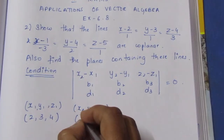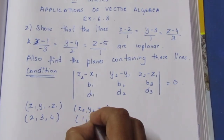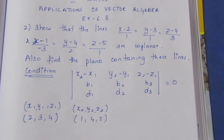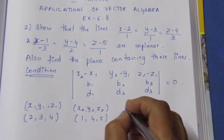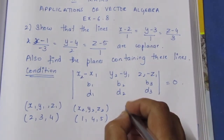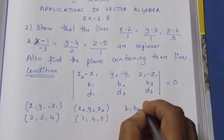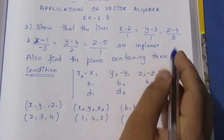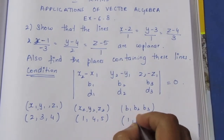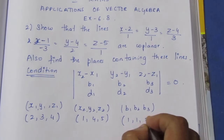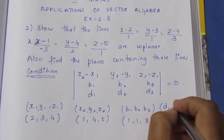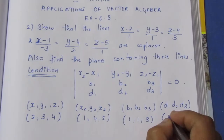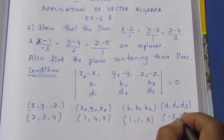We have two points. Next, the direction ratios d1, d2, d3 for the second line are -3, 2, 1.